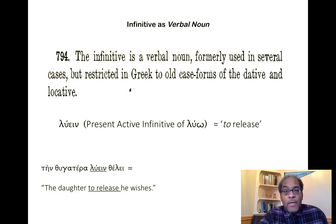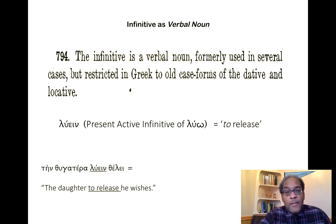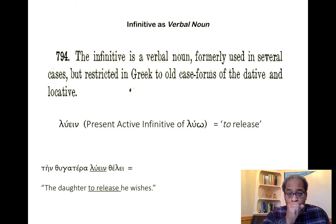The infinitive, on the other hand, is a verbal noun formally used in several cases, but restricted in Greek to the old case forms of the dative and the locative. So luein means 'to release.' You see that 'to,' just like the dative. Luein is the present active infinitive of luo. For example: 'the daughter to release, he wishes' — thelein takes the complementary infinitive, just like in English 'I wish to go to school.' Ten thugatera luein thelei: 'the daughter to release, he wishes.'